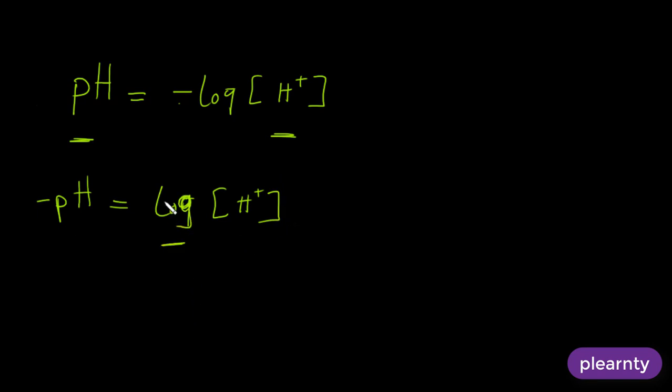Now that you have this, to get rid of this log, you have to multiply both sides by anti-log. So anti-log will cancel log and what you will have left is anti-log of minus pH is equal to the hydrogen ion concentration.